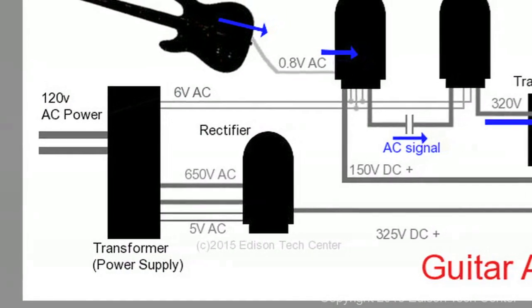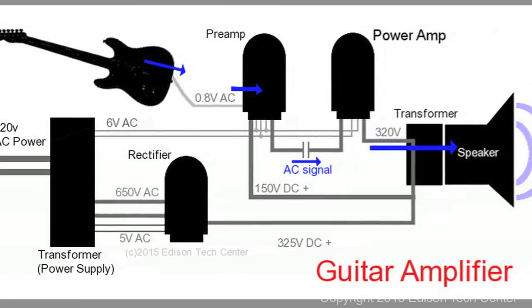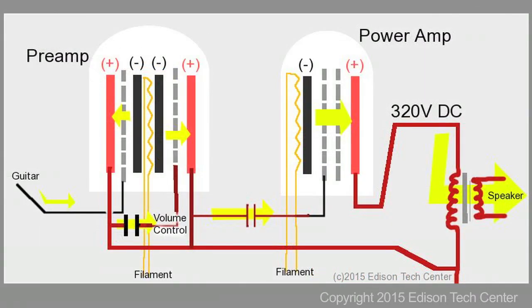The filaments heat up the tubes which allow them to operate, and also step up the voltage to a couple hundred volts in order to drive the actual amplifying circuitry.